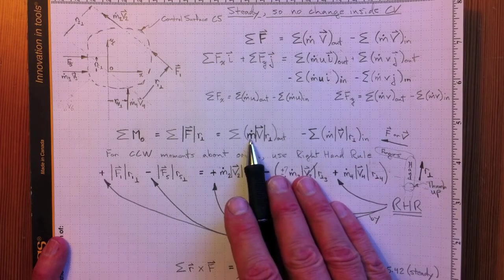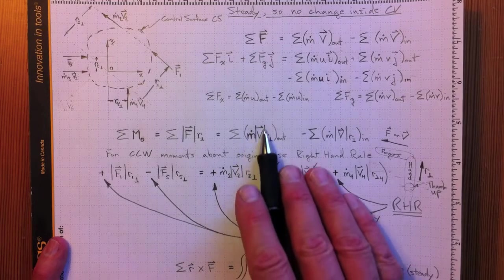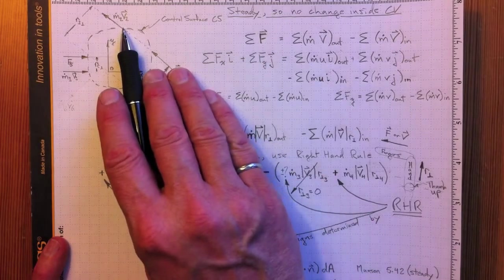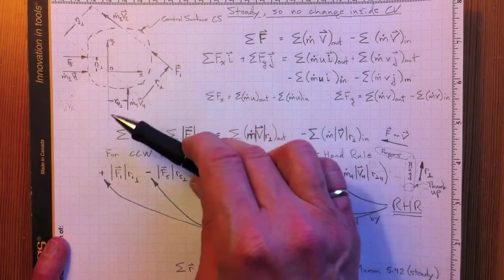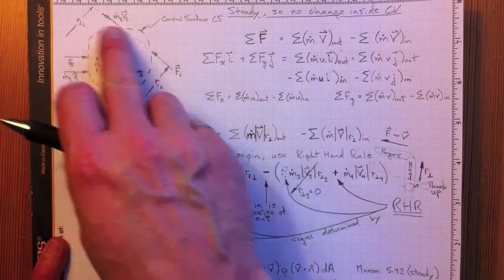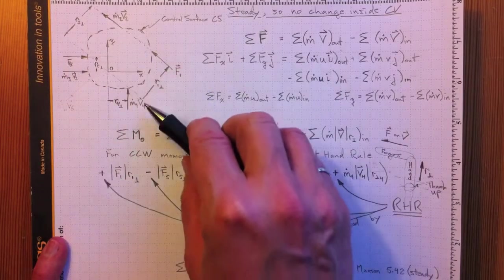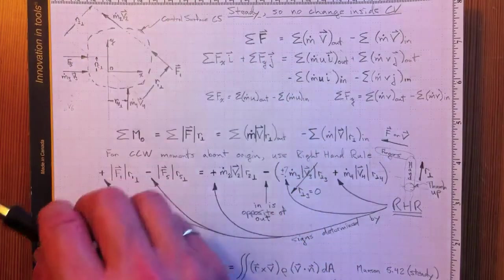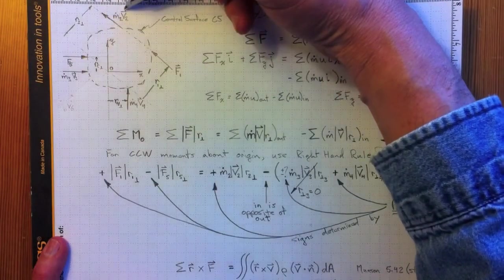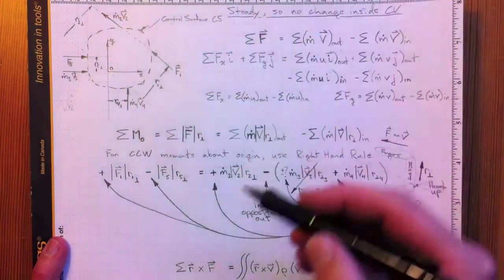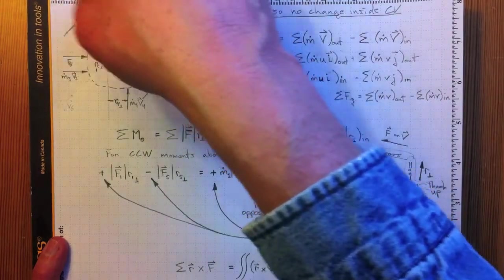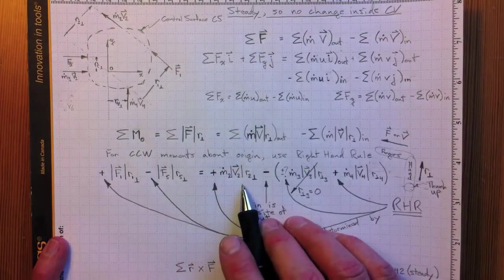So when we look at M dot V perpendicular, sorry, magnitude of the velocity times R perpendicular, let's look at M2 V2. It should generate a moment exactly the same sense as F1, so R1 perpendicular and R2 perpendicular are the same. M dot 2 times magnitude of V2. The F1 force will offset the thrust applied by M2 V2, so it's over here on the opposite side.